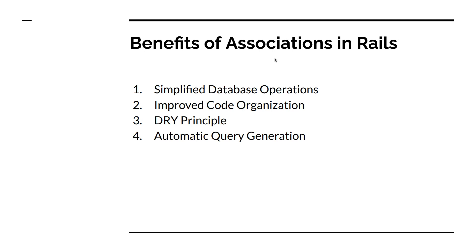That covers the theoretical side of active record associations. In our course project moving forward, we will try to implement all kinds of associations — one-to-many, many-to-many, one-to-one, and even polymorphic association, which we did not discuss here. But for now, let's discuss what we will do next in the course project.